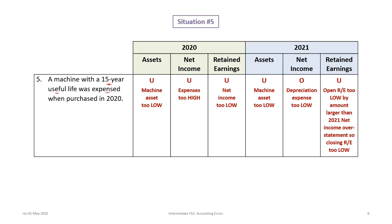Fifth situation: a machine with a 15-year useful life was expensed when purchased in 2020 — it should have been capitalized. In 2020, the machine asset is understated, expenses are overstated, net income is understated, and retained earnings are understated. In 2021, the machine asset is still understated. Net income is now overstated because no depreciation is taken, so expenses are understated. Retained earnings remain understated, as the opening balance deficiency exceeds the 2021 overstatement.